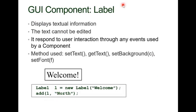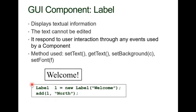Let's start with Label. Basically, the Label displays textual information, and you cannot edit it. It responds to user interactions through events used by the component. The methods used with Label are: setText(), getText(), setBackground() for color, and setFont().